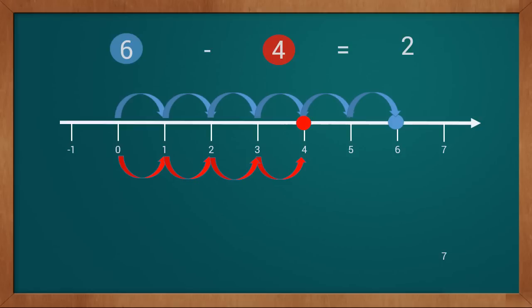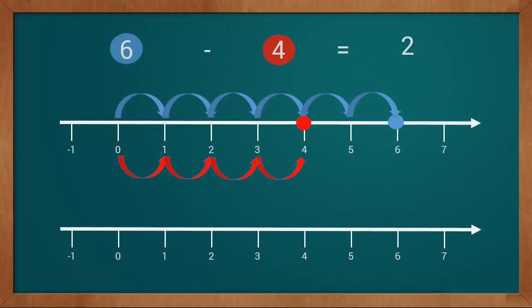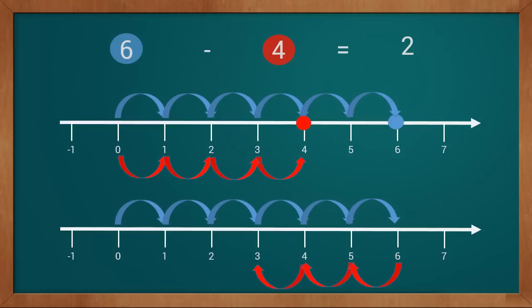Now we will learn subtraction with the help of a number line. We draw a number line and mark six: one, two, three, four, five, six. We reached six. Now we subtract four — we move four points backwards from six: one, two, three, four. We reached two. So six minus four equals two. Today we learned subtraction with the help of a number line.